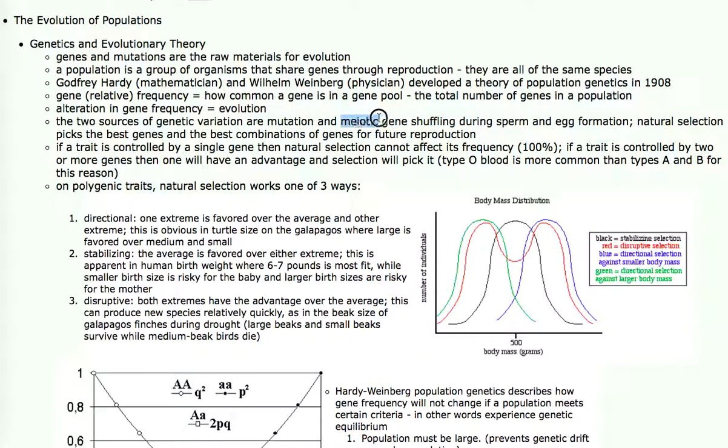Meiosis shuffles the genes around when it's making sperms and eggs, so that every sperm gets a different combination of genes from every other sperm. So no two sperm are identical. Natural selection, based on mutation and meiotic gene shuffling, picks the best genes and the best combinations of genes in each generation.